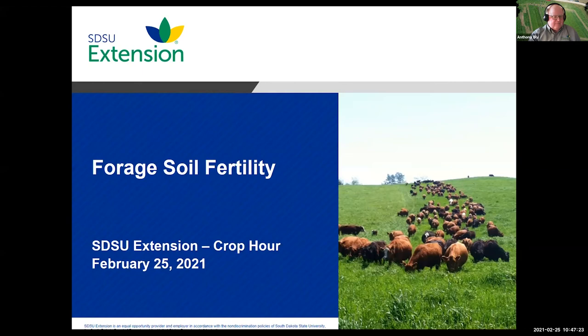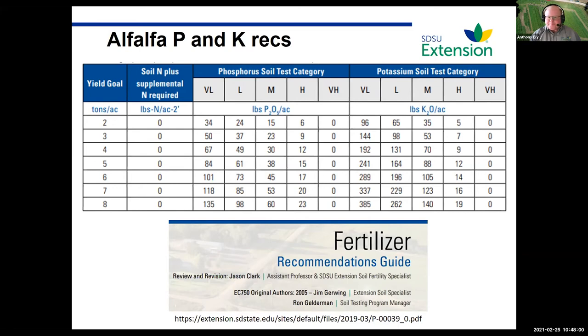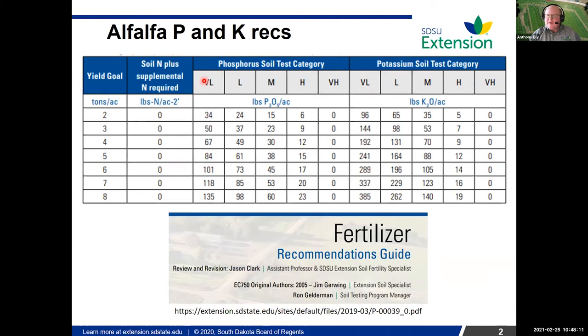The first slide is our current nutrient recommendations for alfalfa from the SDSU fertilizer recommendation guide, available on our website. Recommendations are based on yield goal, so knowing your yield goal is very important in determining phosphorus and potassium requirements. They're based on categories from very low to very high for both phosphorus and potassium — as soil test values go down, recommendations go up, and as yield goal goes up, so does the recommendation. There is no nitrogen recommendation for alfalfa.